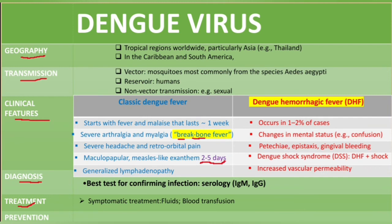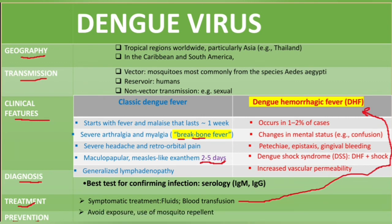There is no specific treatment for dengue fever. What we can do is symptomatic treatment — for example, giving fluids to avoid dehydration. In the case of dengue hemorrhagic fever, there may be serious internal bleeding, so blood transfusion may be required.